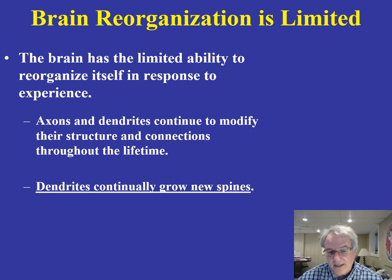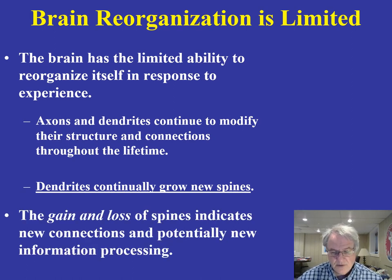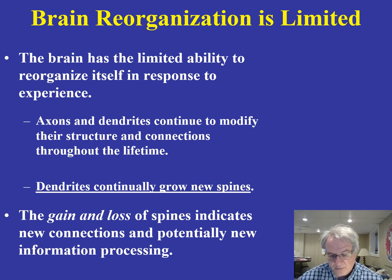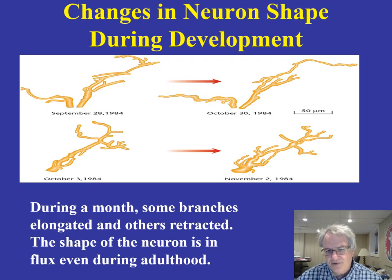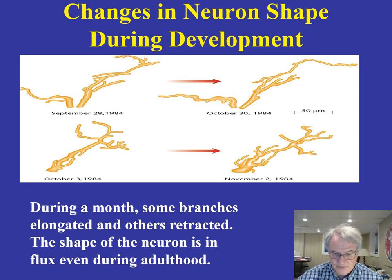Axons and dendrites modify their structure and connections over the entire lifetime. Dendrites continually grow new spines, and it's the gain and loss of those spines that directs the extent of new information processing. In just a one- to two-month period, some branches become elongated while others retract — the shape of the neuron is constantly in flux during adulthood.